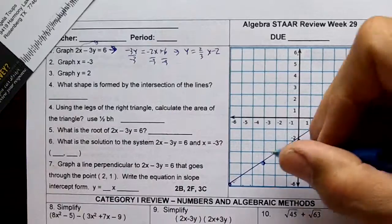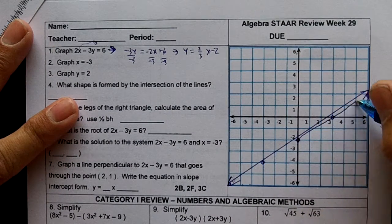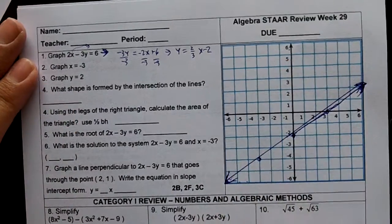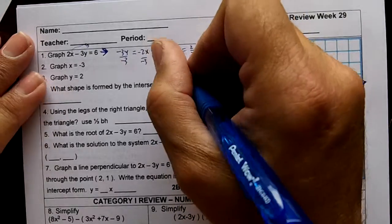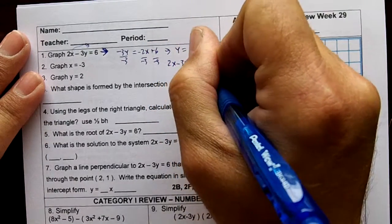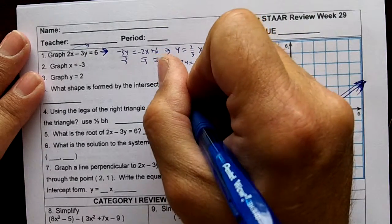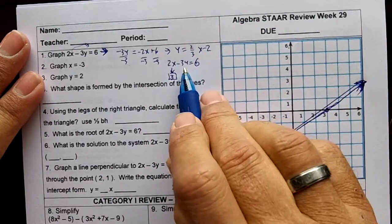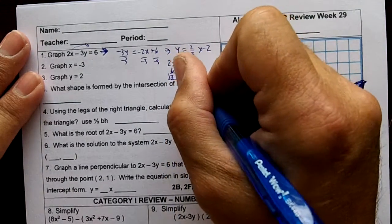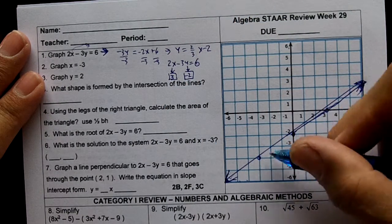That would be this line. Another way to do this is to get your x and y-intercepts. 2x minus 3y equals 6. Two times what is 6? Three, right. So the x-intercept will be a positive 3. Negative 3 times what is 6? The y-intercept's going to be a negative 2. If you look at the line, the y-intercept's negative 2 and the x-intercept's 3.